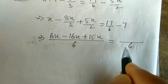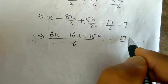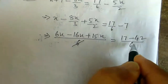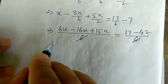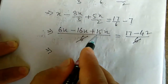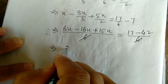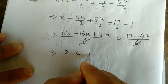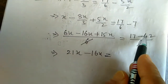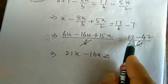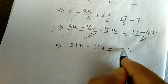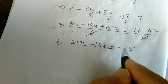So on the left: 6x - 16x + 15x. Adding positives: 6 + 15 = 21x, minus 16x = 5x. On the right: 17 - 42 = minus 25. Since 42 is greater, the result is negative, so 5x = -25.